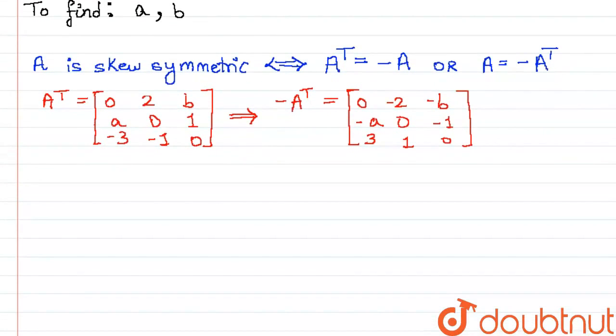Let us now equate the two matrices A and negative A transpose since we know that A is skew symmetric. Matrix A, which is 0, A, -3, 2, 0, -1, B, 1, 0 is equal to the matrix negative A transpose that is 0, -2, -B, -A, 0, -1, 3, 1, 0.